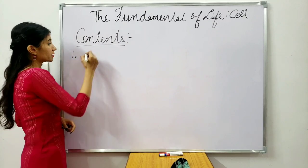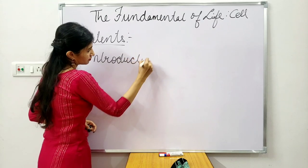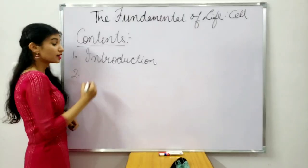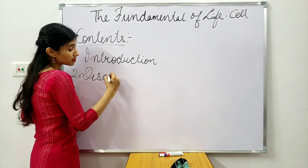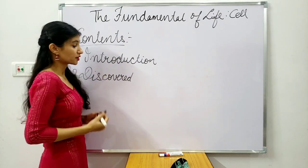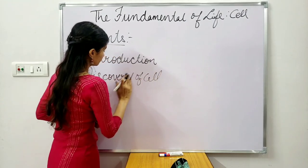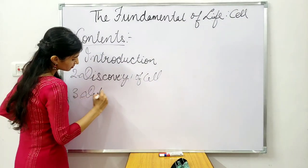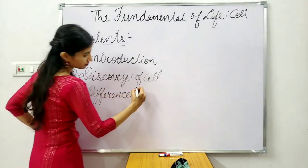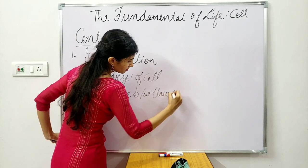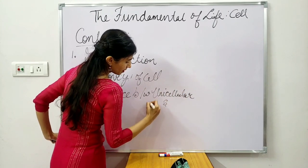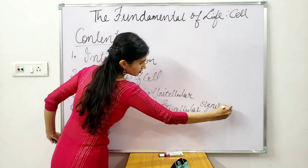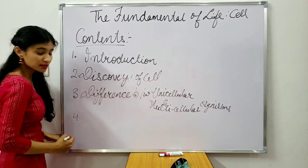The first content is introduction — we'll discuss what a cell is, why it is important, and how it looks. Second is discovery of the cell, meaning who discovered it and whether it was discovered all at once or over time. Third, we will discuss the difference between unicellular and multicellular organisms.